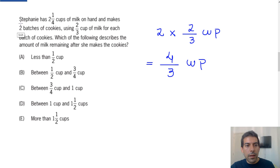At the beginning, the question said that Stephanie has 2 and 1/4 cups of milk on hand. The question asks us which of the following describes the amount of milk remaining. So the remaining milk must equal 2 and 1/4 minus the amount that she used, that's 4/3 cups.